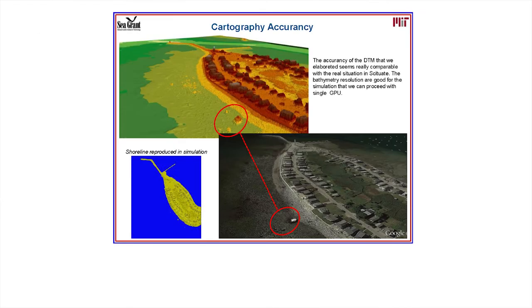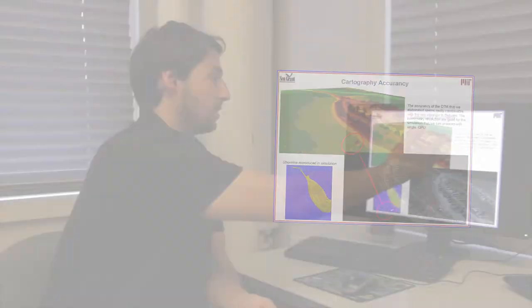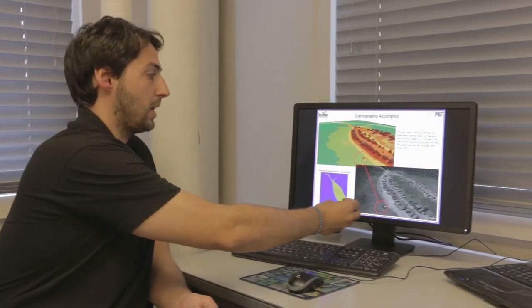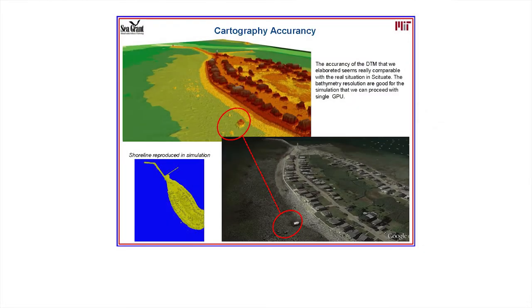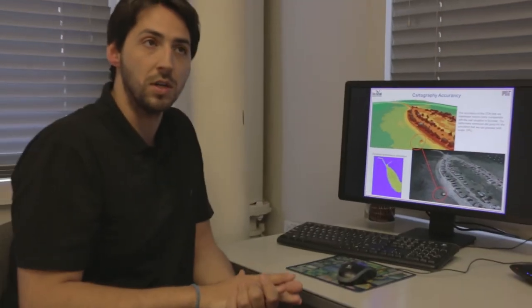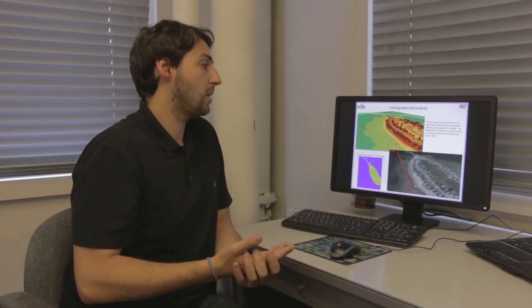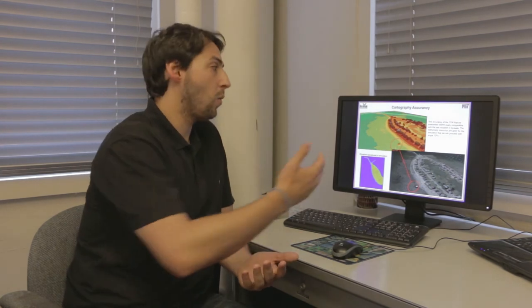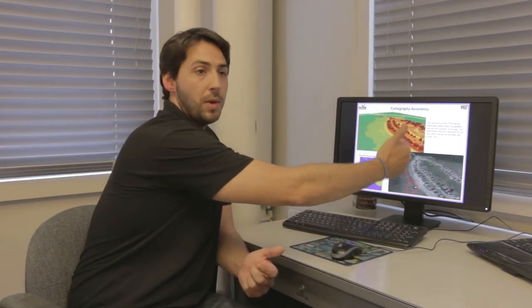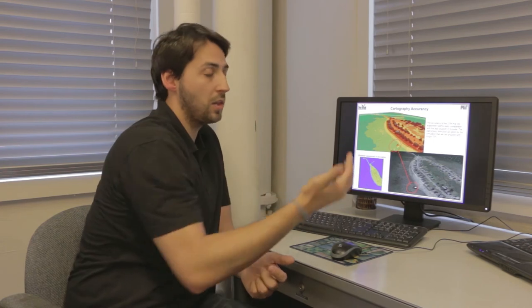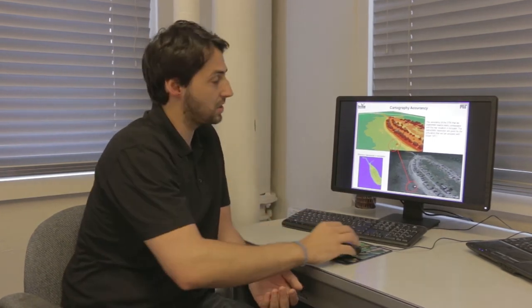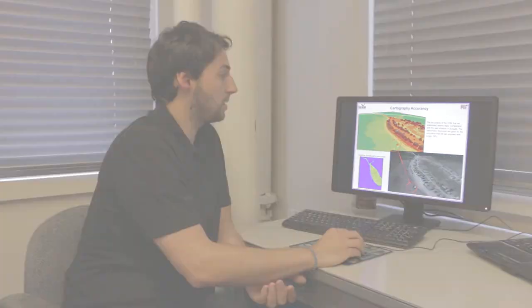The bathymetry that we use for our model is very accurate. We can reproduce also the little rocks in the surf region and the sea wall, the dimension of the sea wall, also the dimension of the houses. With this good bathymetry that is the base for our model, we can correctly understand if there are some flooding problems and with which kind of waves we have flooding problems in this region.